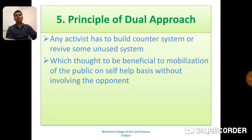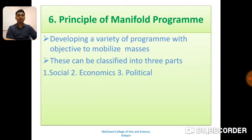Coming to the fifth principle of social action given by Brito — the principle of Dual Approach. Any activist has to build a counter system or revive some unused system that is thought to be beneficial to the mobilization of the public on a self-help basis without involving the opponent. The sixth principle is the principle of Manifold Program — developing a variety of programs with the objective to mobilize masses, classified into three parts: social, economical, and political sectors.